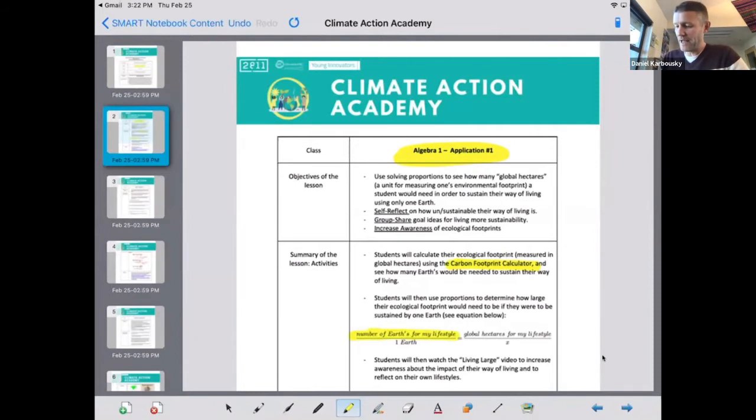So for algebra one, one of the examples was there's a carbon footprint calculator that we get pointed to in the Climate Action Academy. And one thing it tells you is how many Earths your lifestyle would take to sustain your lifestyle. So you might get something like 2.3 Earths, and it also tells you how many global hectares that translates to, maybe like 150 hectares. But then it begs the question, how many hectares would it take to live on one Earth? So this is a perfect proportion problem where you have one number to 2.3 Earths, is equal to 150 to x, and then you can go ahead and solve this.